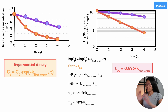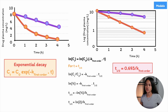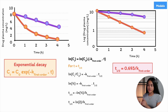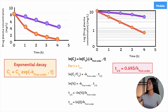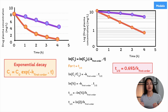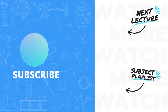From this equation, we can see that the half-life is inversely proportional to the elimination rate constant k. This means that if the drug is eliminated more quickly — if k is larger — the half-life will be shorter. And if the drug is eliminated more slowly — if k is smaller — the half-life will be longer.